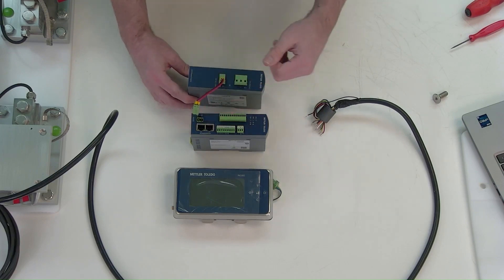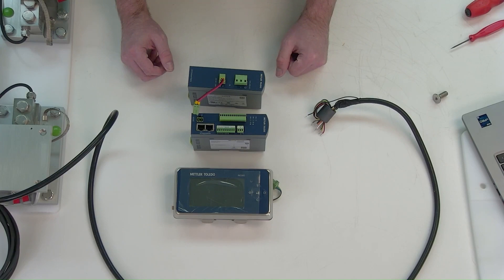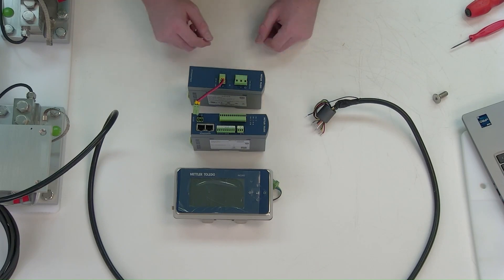There needs to be 24 volts put to the IND 360 one way or another. That may already be available in the cabinet to bring in, but in this case we're going to bring it from the 24-volt power supply and we'll need to wire in somewhere between 100 and 240 volts AC power.